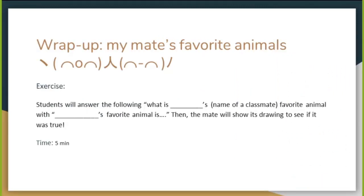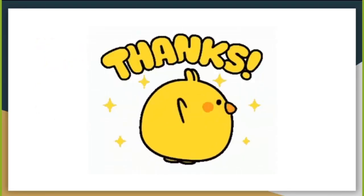Finally, for the wrap-up, it is called My Friend's Favorite Animals. The exercise is that students will answer the question: "What is [classmate's name]'s favorite animal?" For example, "What is Alexa's favorite animal?" And they answer: "Alexa's favorite animal is elephant." Then the classmate will show their drawing to see if it was true. And that's it for our presentation — that was traditional literature. Thanks for your attention.